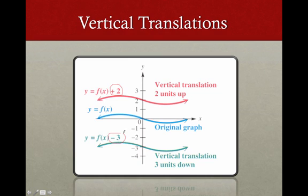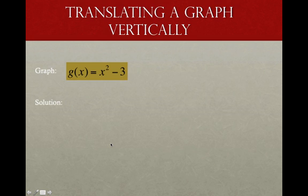If I stick a minus 3 on the outside of that function, then I am moving my original blue function down three spots. And so the x's stay the same, but the y value or y coordinate is three less.